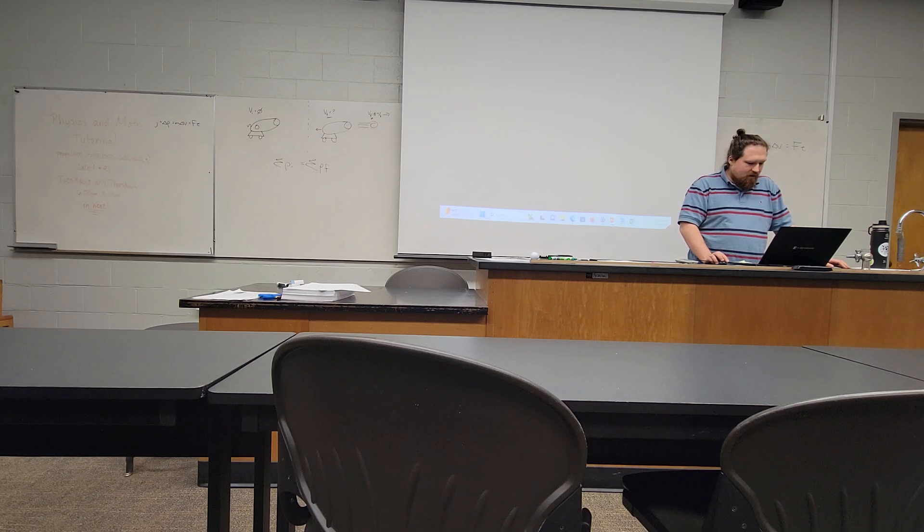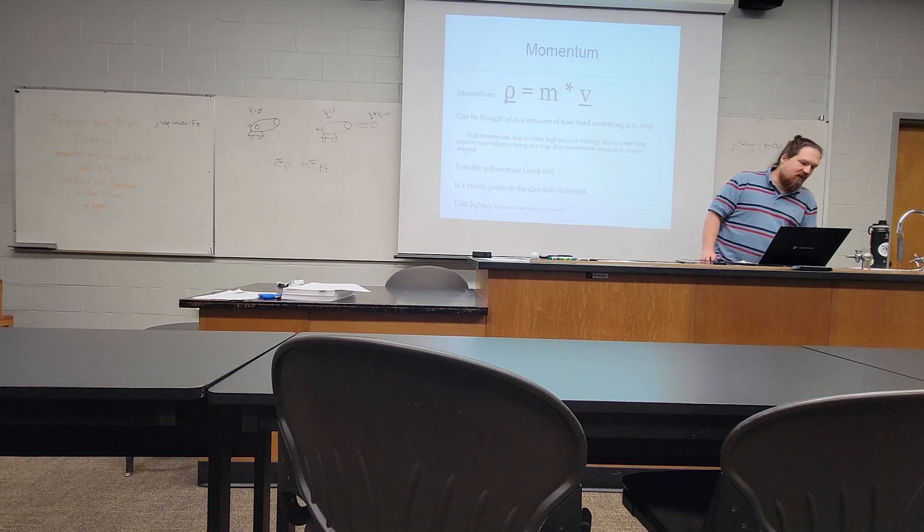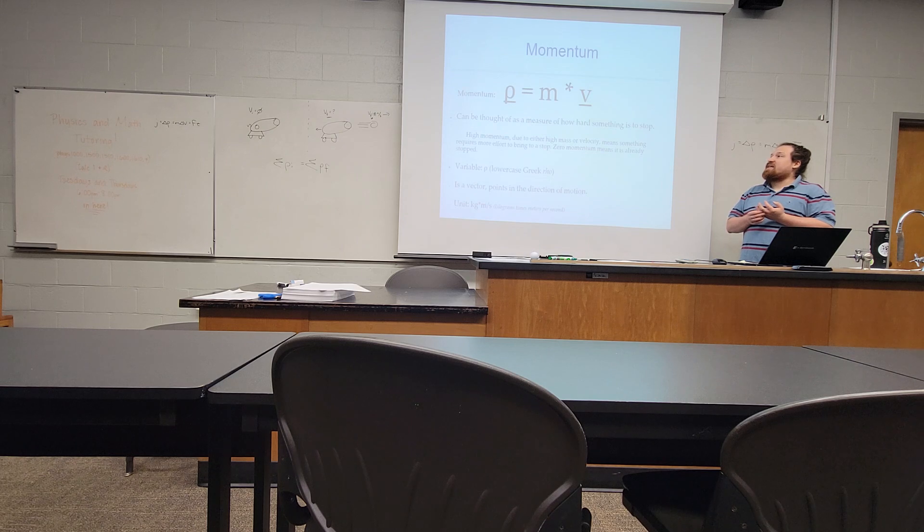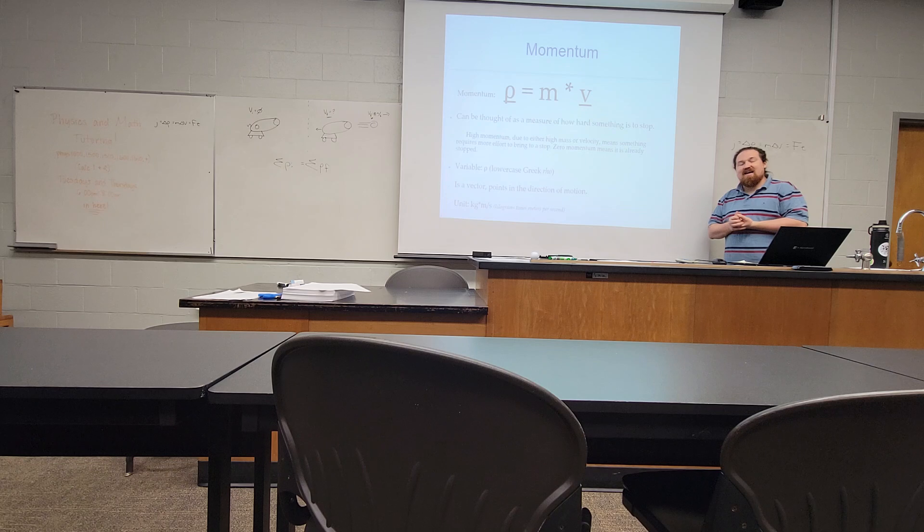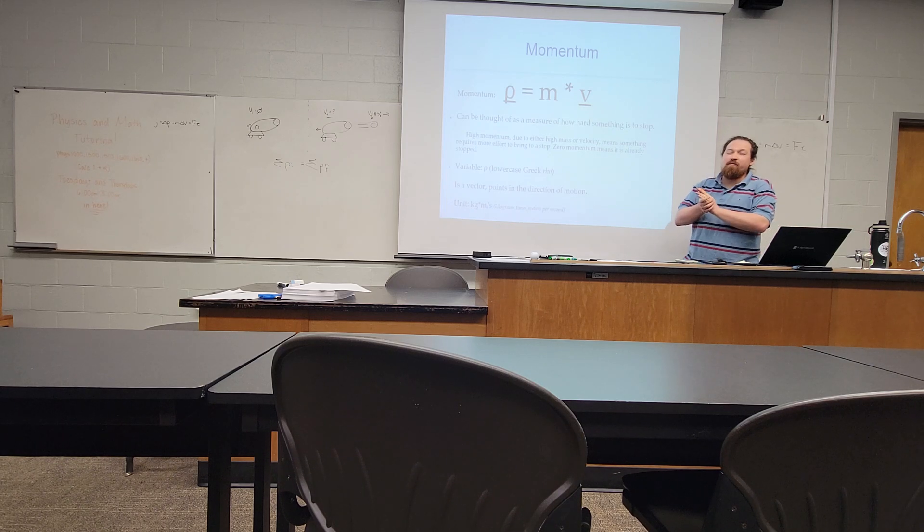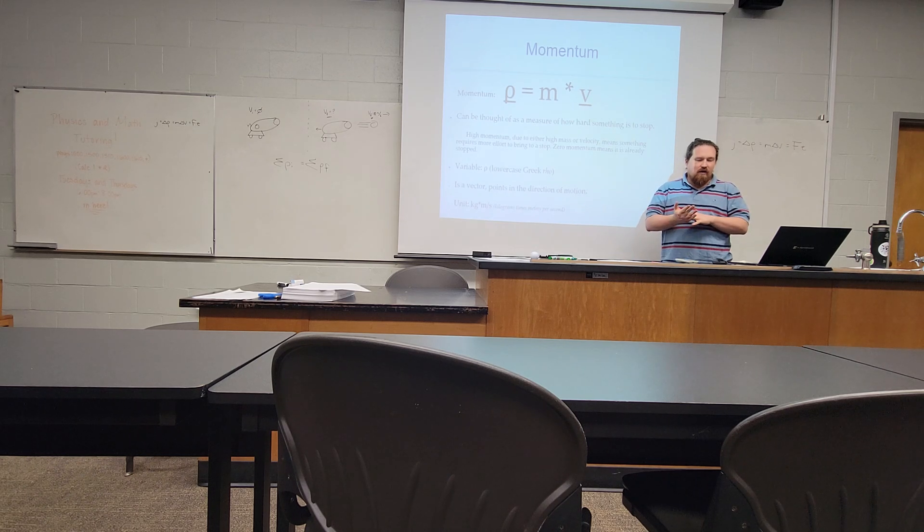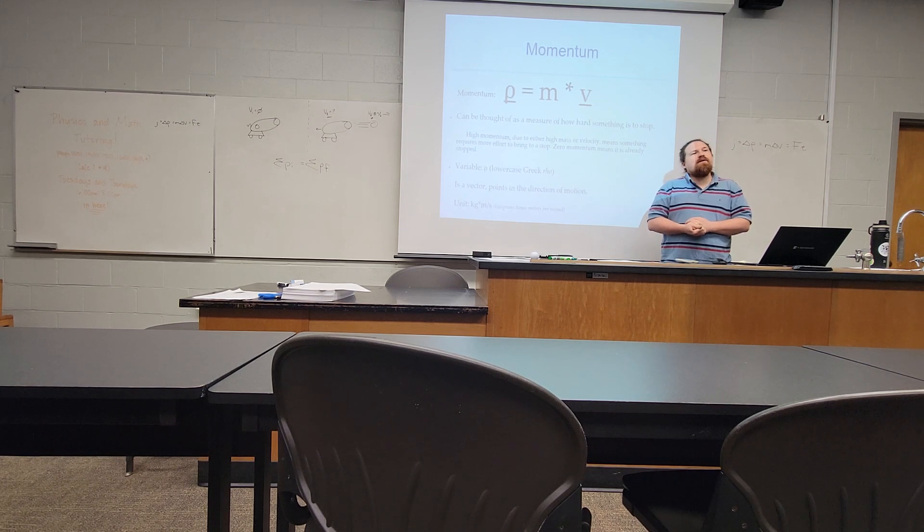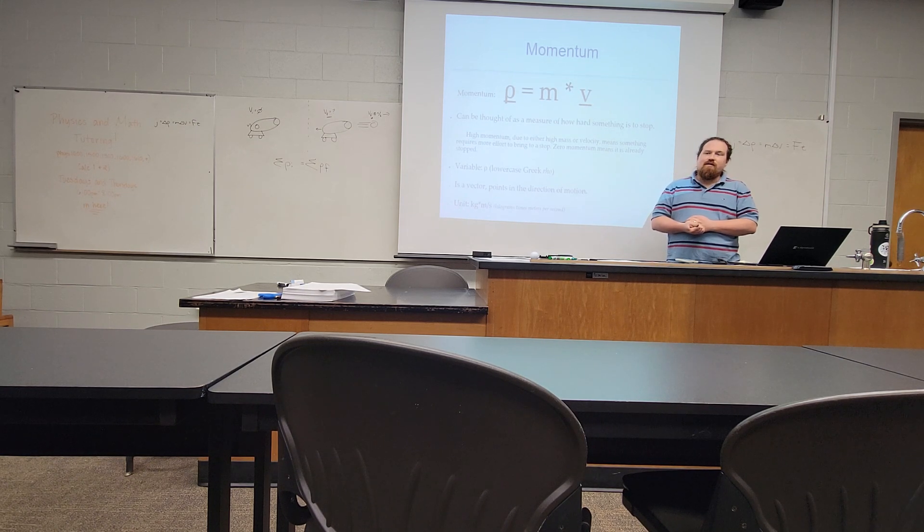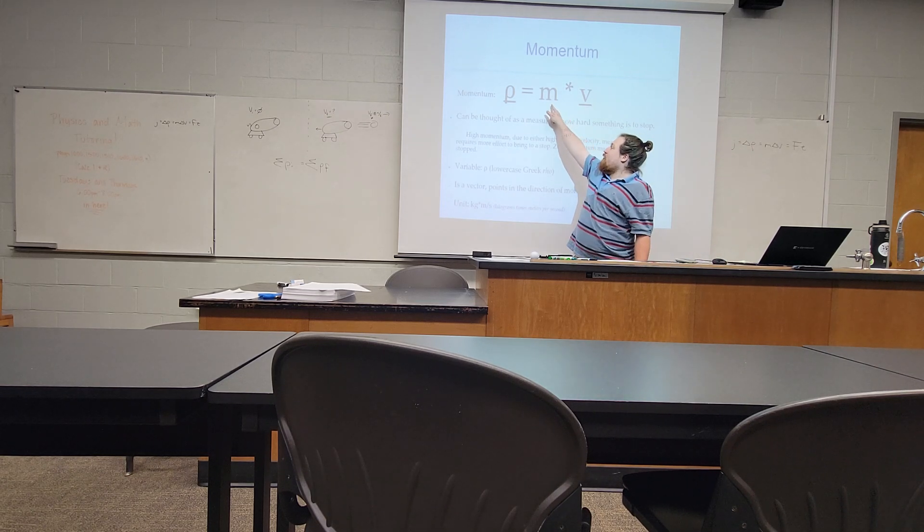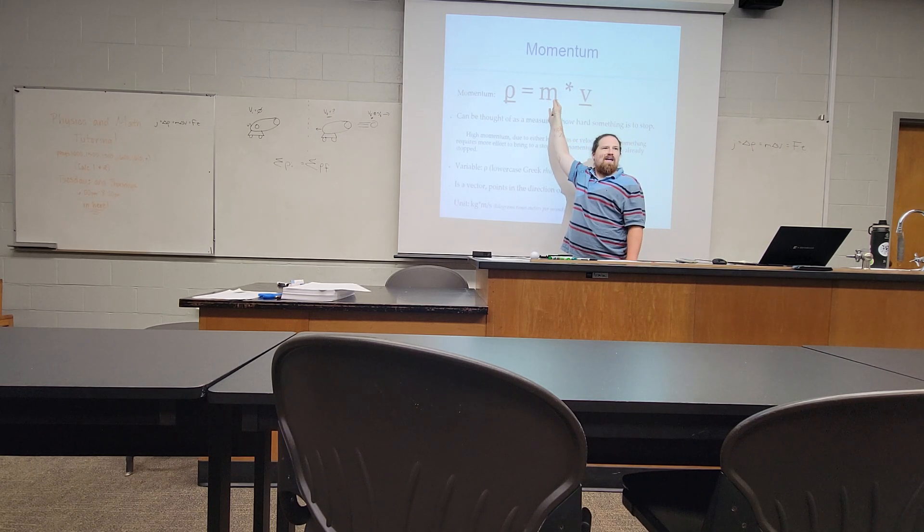For class today, last week we began Chapter 6 talking about momentum, which is defined as a measurement of how difficult something is to stop. If an object has a lot of momentum, it's very hard to stop because it either has a lot of mass, is moving very quickly, or both. If something has no momentum, it's very easy to stop because it's probably already stopped. The only other way that something can have no momentum is if it has no mass. And the only thing that really has no mass is light.